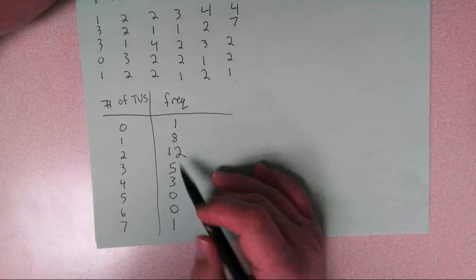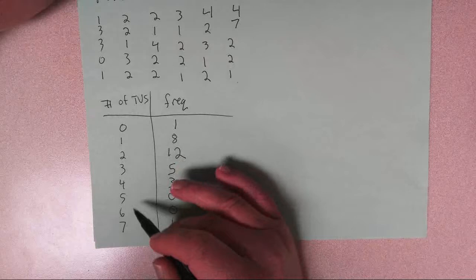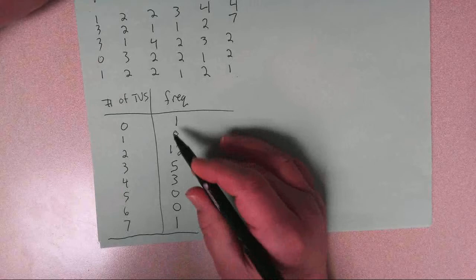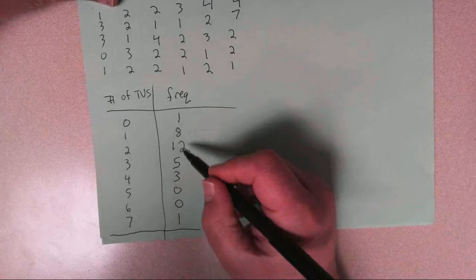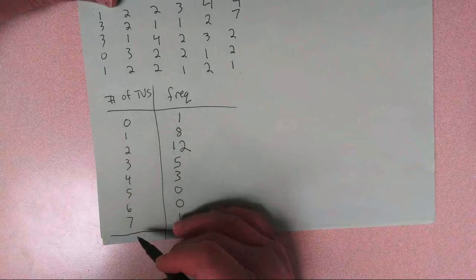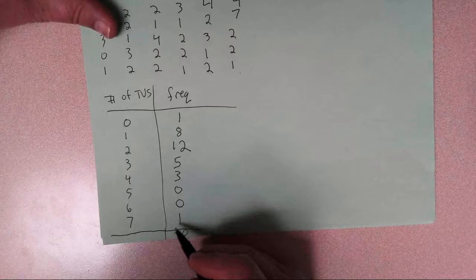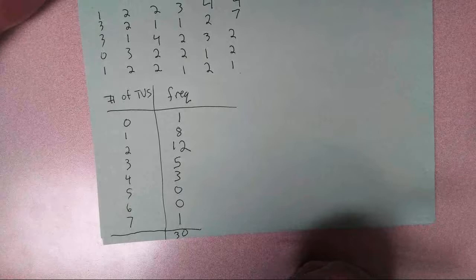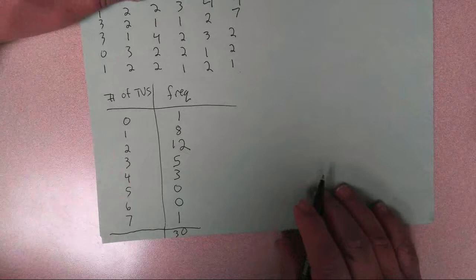And so this is a frequency distribution table. It shows how the data is distributed over the possible values of the variable. And what they say is you should always add up the frequencies to make sure you didn't miss any values. So we got 20 and another 10, and so this adds up to 30. And that's what I should have, 30 households. This is the number of households for each of these, and so these should total up to 30 households. This adding these up is kind of a check to make sure I haven't missed any observations.